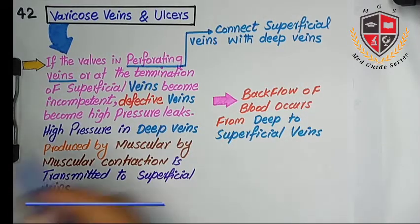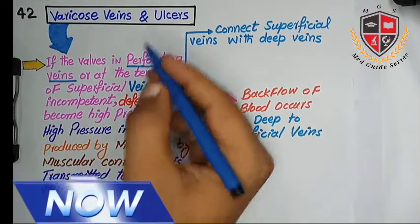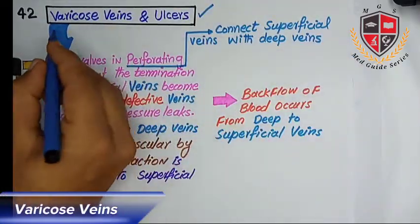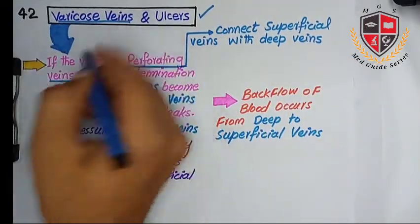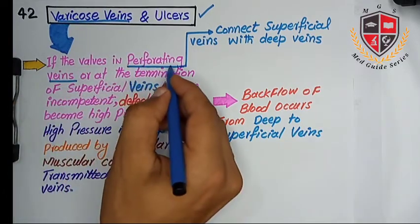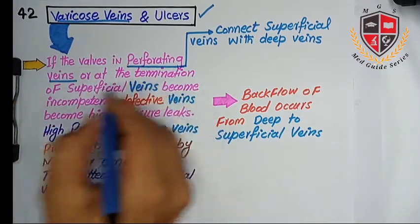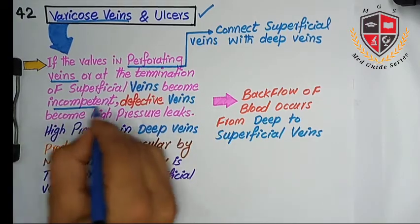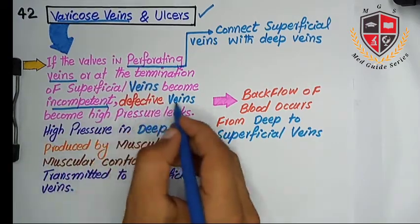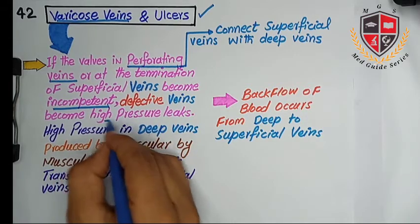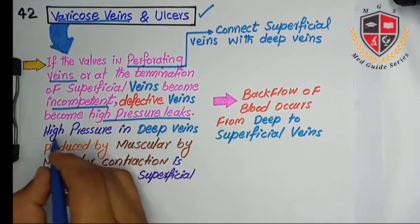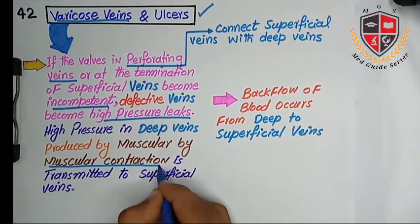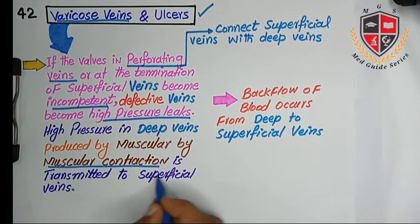The next clinical topic is varicose veins and ulcers. What occurs in varicose veins? If the valves in the perforating veins or at the termination of superficial veins become incompetent, the defective veins become sites of high-pressure leakage, and high pressure in deep veins produced by muscular contraction is transmitted to the superficial veins.